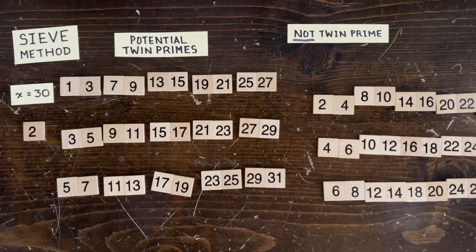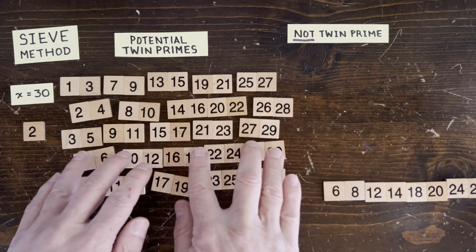Obviously, 8, 10 can't be a twin prime because neither 8 nor 10 is prime. Okay, let's put those back.